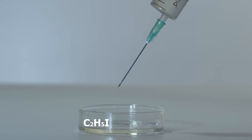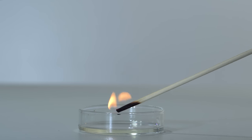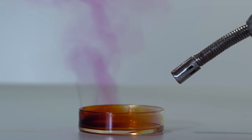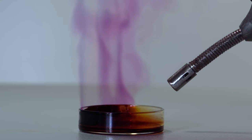The homologue of methyl iodide is ethyl iodide, which is also a highly combustible liquid. Let's see what happens if we drop burning magnesium in ethyl iodide.